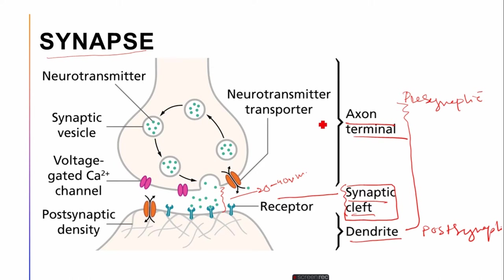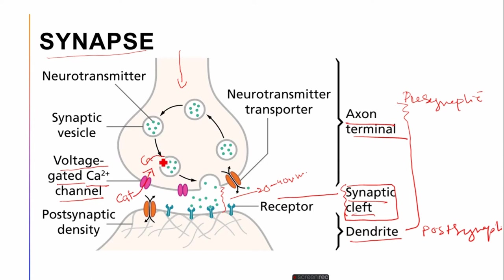For example, this is an axon terminal — a part of the neuron — and from here the nerve impulse is coming. When the nerve impulse travels down and reaches the axon terminal, it causes the opening of certain calcium channels known as voltage-gated ion channels. When these ion channels are opened, the calcium ions outside the neurolema move in. When they move in, they take the vesicles — these are the synaptic vesicles — which bear neurotransmitters inside.